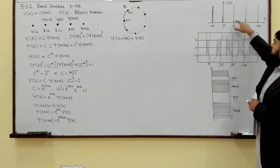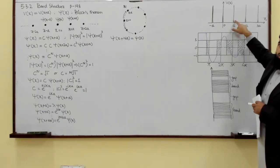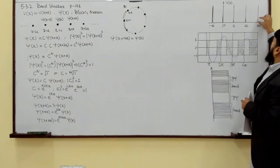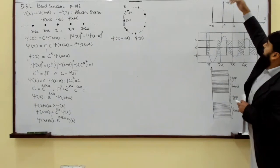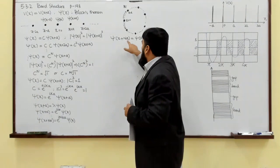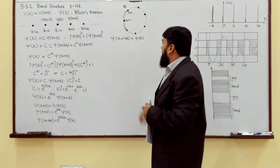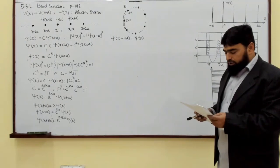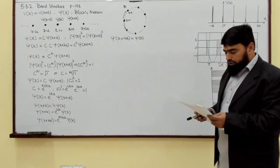This is the resolution of the periodicity in Bloch's theorem using the Born–von Karman periodic boundary condition. The electron at this atom has a wave function, and when we go around the entire ring of N atoms, we return to the same atom, so the wave function must be equal. This solves the edge problem and maintains periodicity throughout.